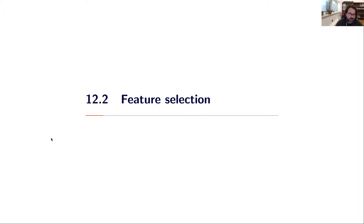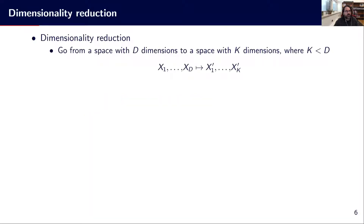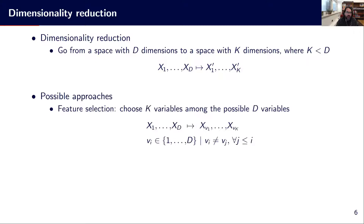Now we will talk about feature selection. When we talk about dimensionality reduction, the idea is to go from a space in d dimensions to a space in k dimensions, where k is much smaller than d. This can be helpful to train classifiers or supervised learning models in ways that will be easier, because the input dimensionality will be reduced.